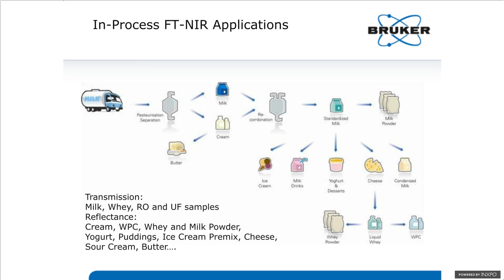There are a number of different measurement techniques appropriate in a process environment, which will direct us to what types of probes to use. In transmission — where we transmit light through the sample and collect it on the other side — we measure milk, whey, RO, and UF samples in real time for in-process applications. The other primary measurement mode is diffuse reflectance, where we illuminate the sample and collect the diffusely reflected light back from the sample. In reflectance mode, we would measure samples such as cream, WPC, whey, milk powder, yogurts, puddings, ice cream premix, cheese, sour cream, butter, and many other sample types where we wouldn't be able to transmit light through.